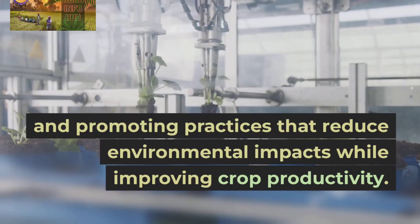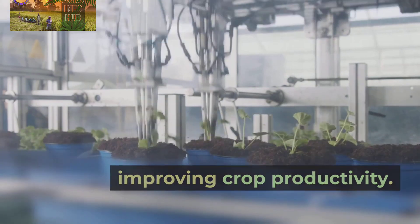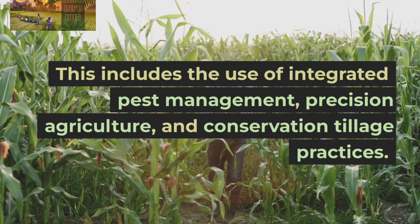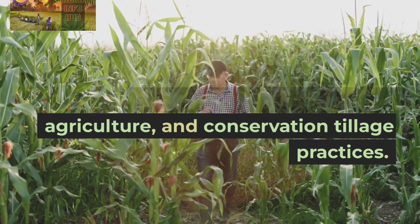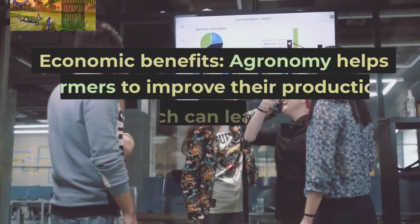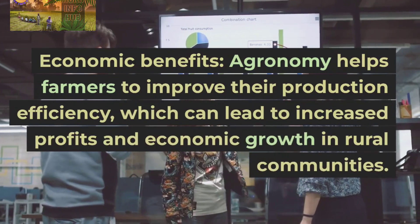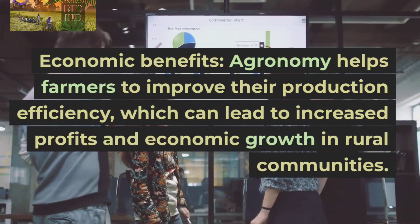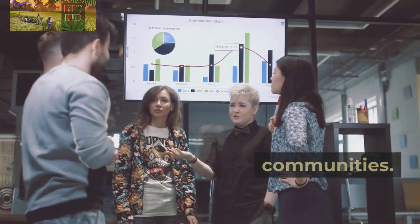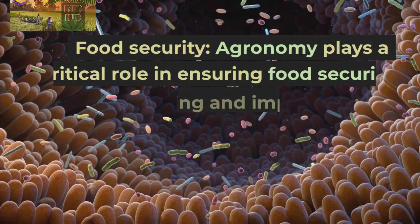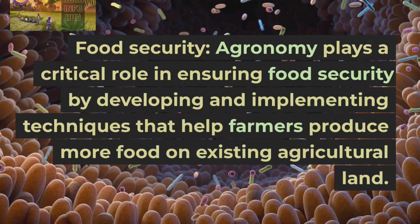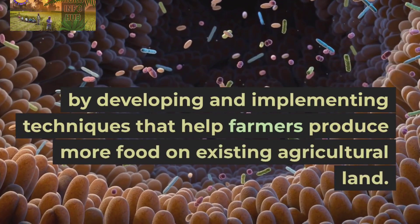Sustainability: agronomy plays a significant role in promoting sustainable agriculture by developing and promoting practices that reduce environmental impacts while improving crop productivity. This includes the use of integrated pest management, precision agriculture, and conservation tillage practices. Economic benefits: agronomy helps farmers to improve their production efficiency, which can lead to increased profits and economic growth in rural communities.